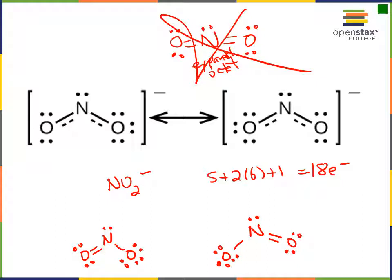We know these two structures have equal formal charges: a double-bonded oxygen has FC = 0, nitrogen with three bonds and a lone pair has FC = 0, and a single-bonded oxygen with three lone pairs has FC = −1. Since these two structures are equivalent, they are resonance structures for NO₂⁻. What actually exists is the average — the double bond is delocalized and shared equally between the two oxygens.